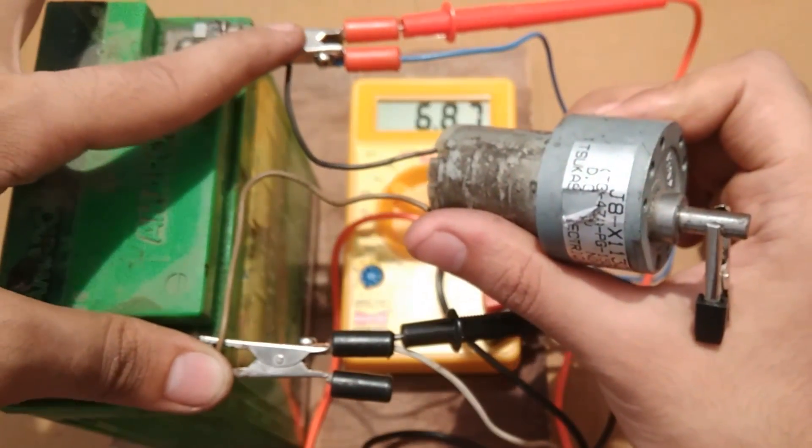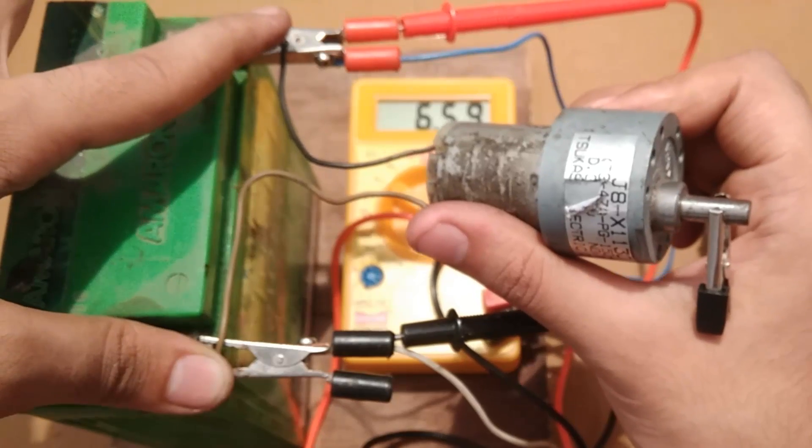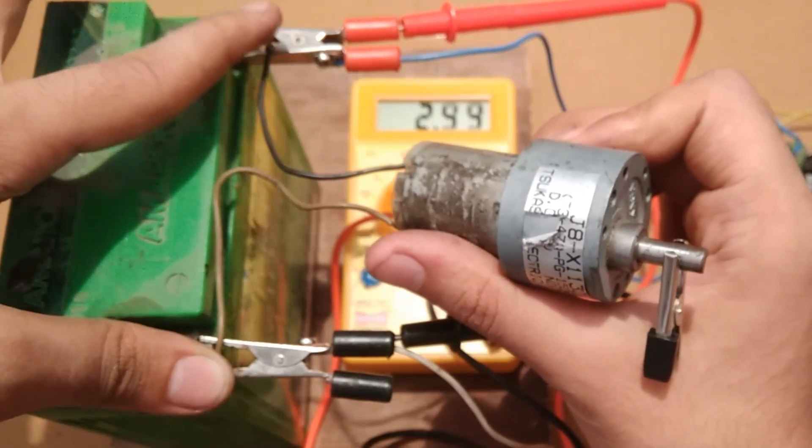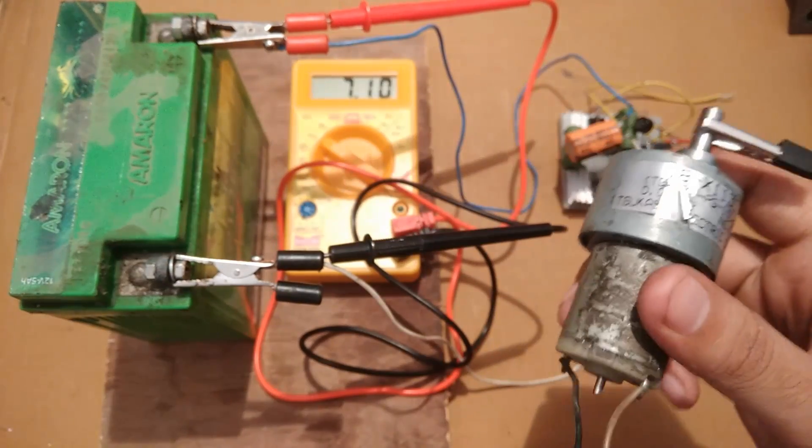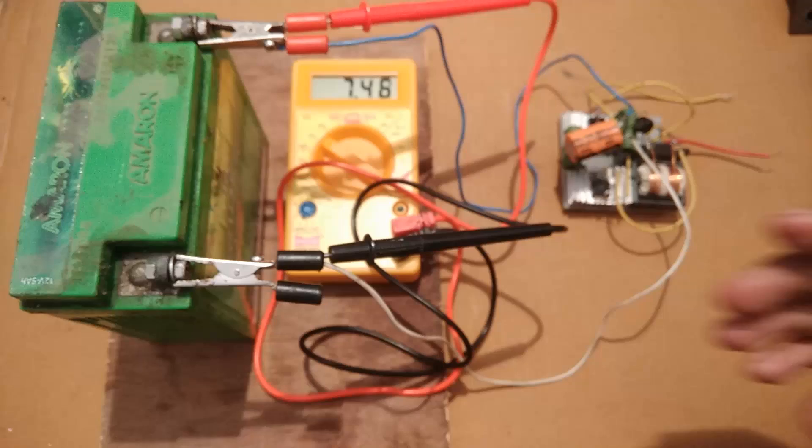As soon as I connect the terminals of the motor to the battery, the voltage indicated on the multimeter drops to even 1.5V or 2V DC, which indicates that the battery is very discharged.